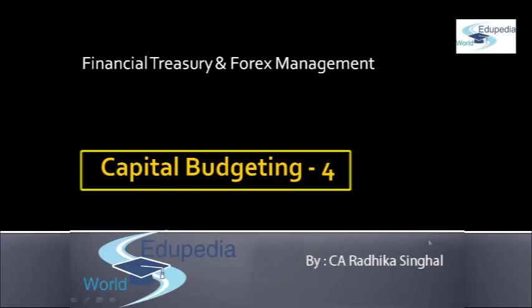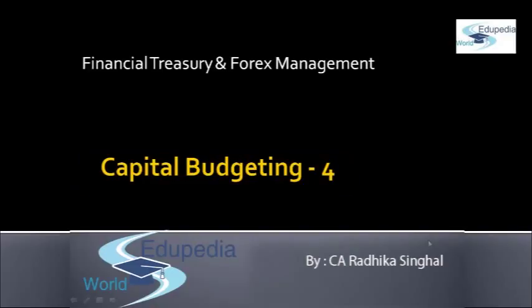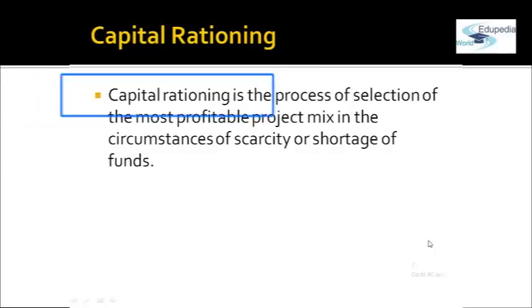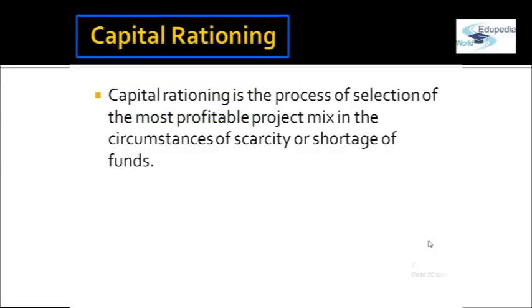What happens is that all the projects which are available, or which are more beneficial to the organization, are not opted for. Generally, a smaller investment project is taken considering the ceiling limit. In order to utilize the full ceiling limit, other than the most profitable project, those projects which are beneficial but not the most profitable one are chosen. This process is called capital rationing, which is generally done when there is a shortage of funds, and a project mix has to be taken in circumstances of scarcity or shortage of funds.